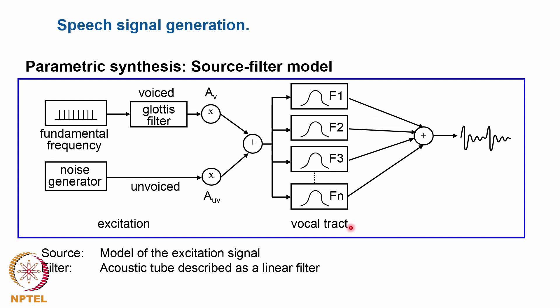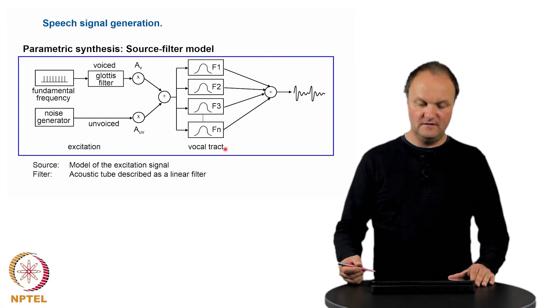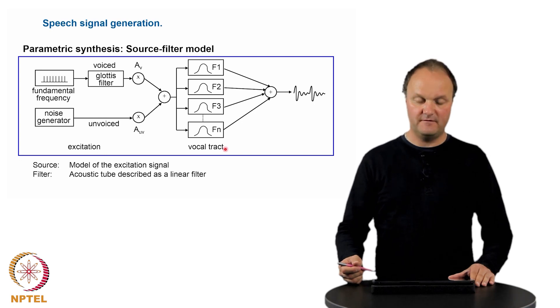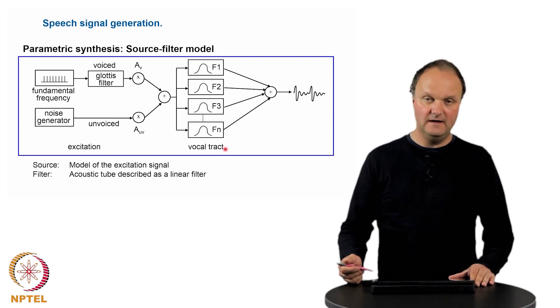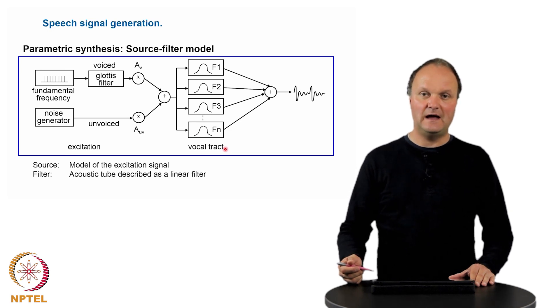So for each sound to be produced, we have to put values for all these characteristics of the speech production process. Unfortunately, this source filter model is a rather simplified version of the speech production process, and this is why the speech signals which come out of such a process are relatively limited with respect to their naturalness.